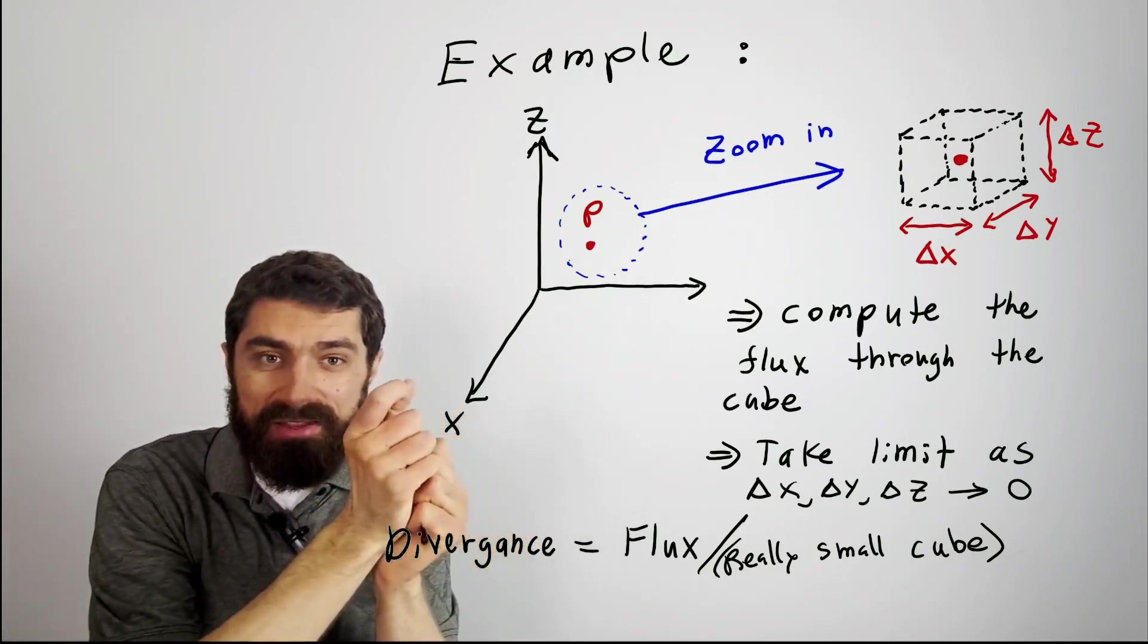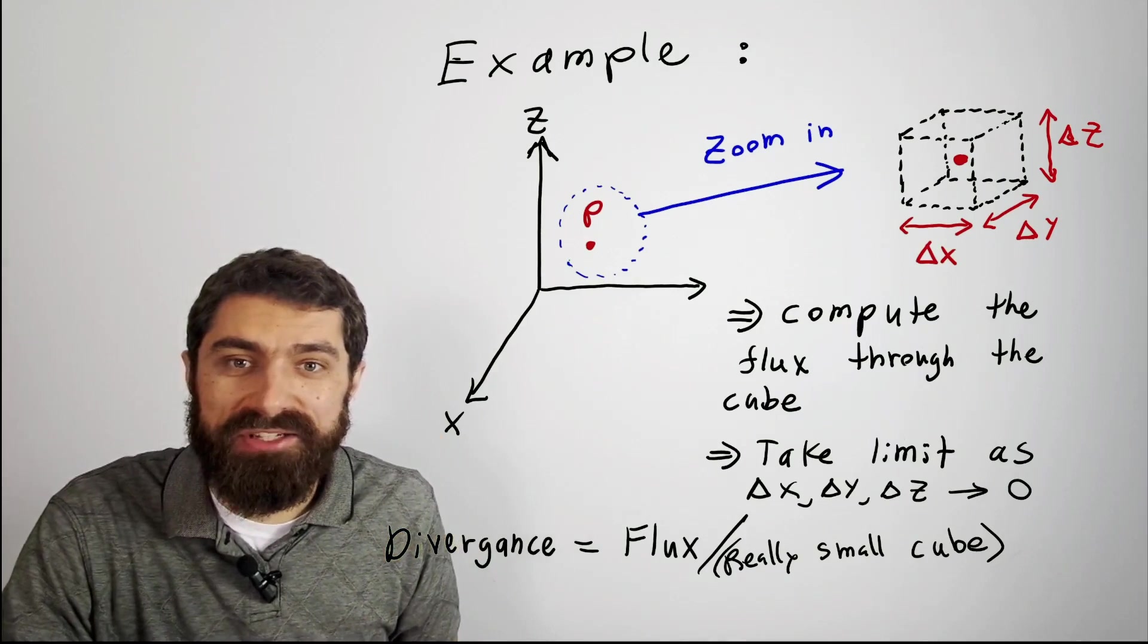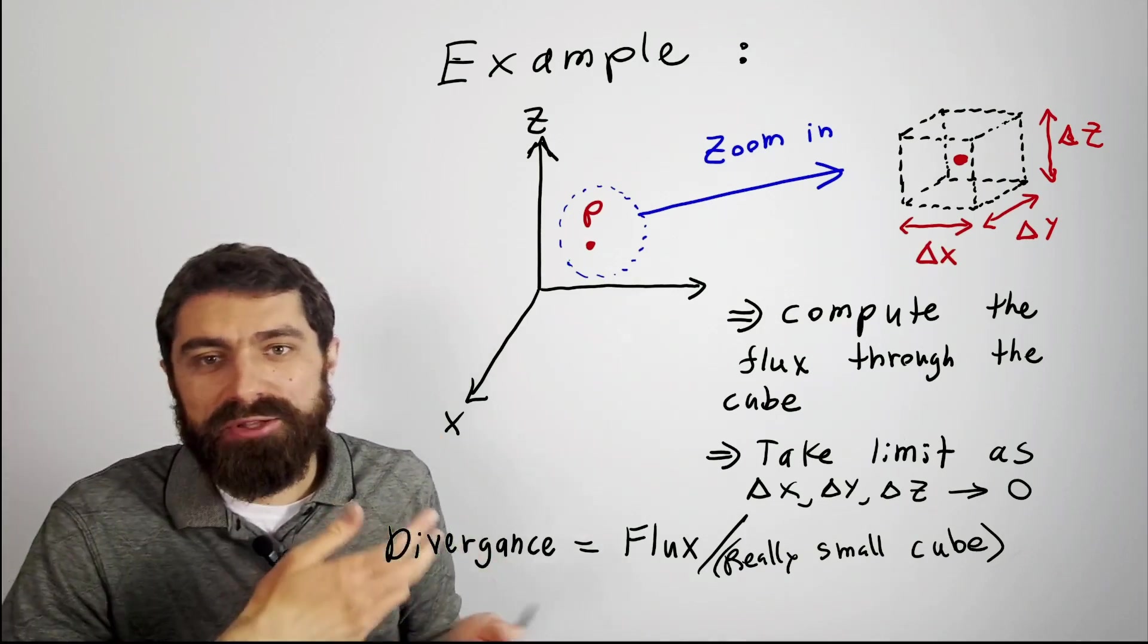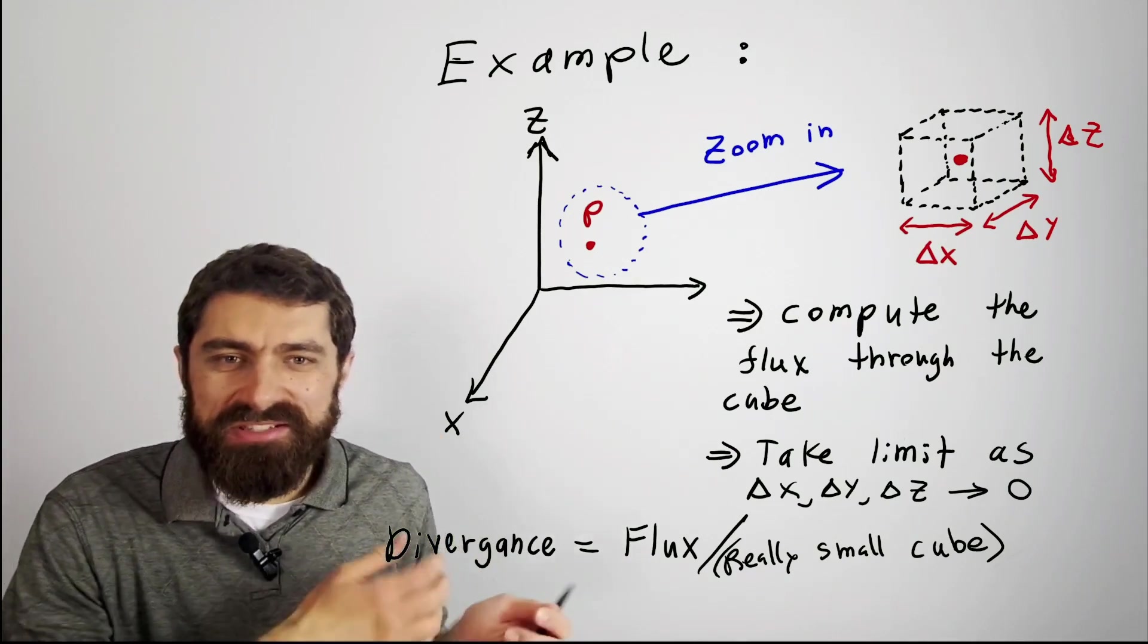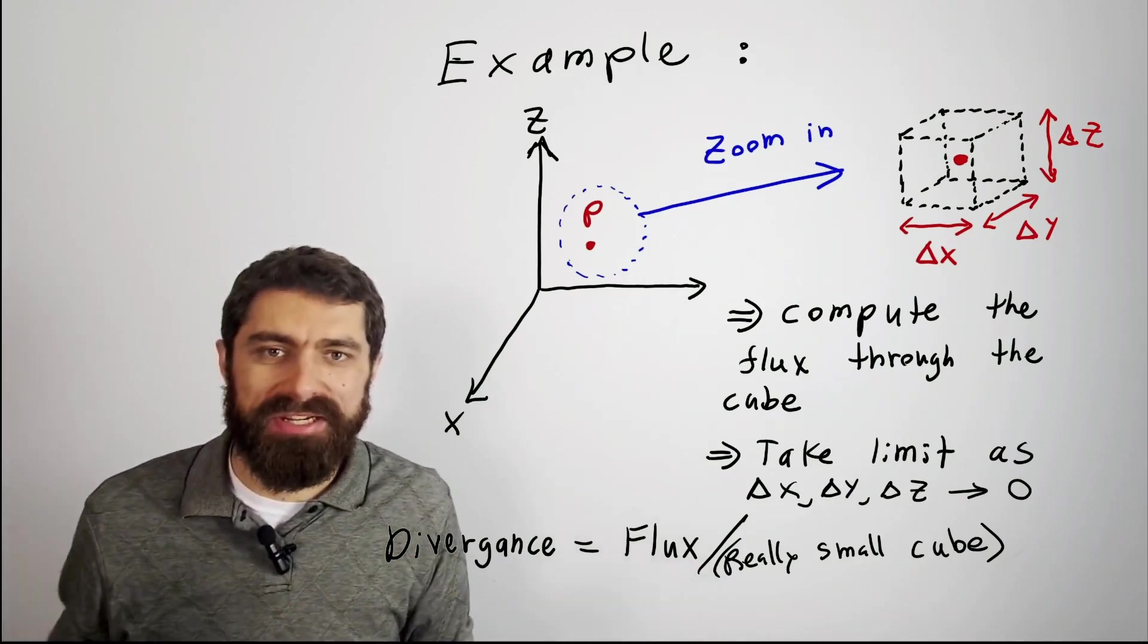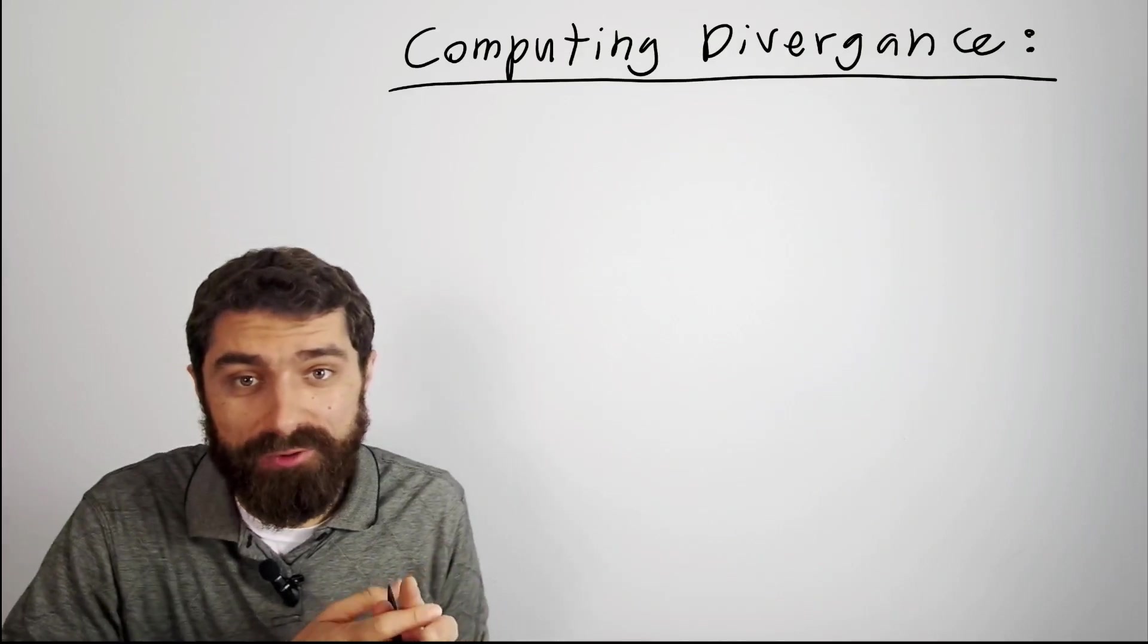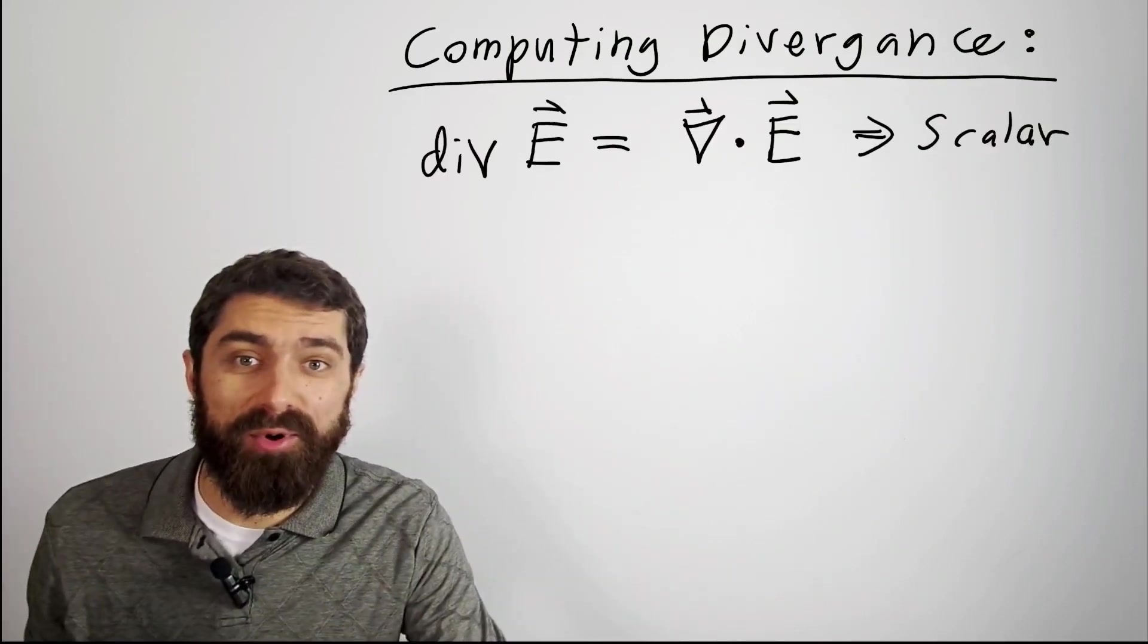The divergence, put in rather informal language but it makes it easier to memorize, is basically the flux per really small cube, or infinitesimally small cube. So to compute divergence, it turns out we can use the fancy del operator.